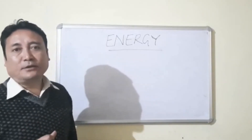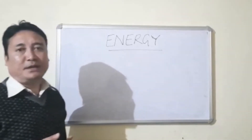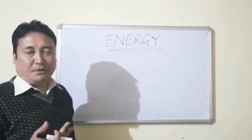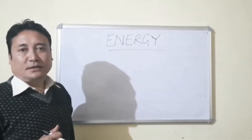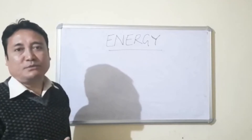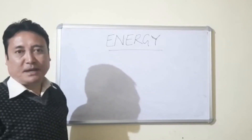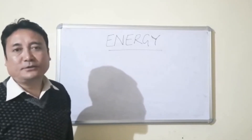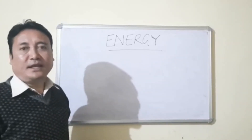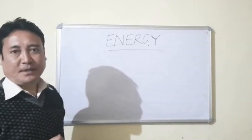There is a law of conservation of energy which states that energy can neither be created nor destroyed, but it can be transformed from one form to another. For example, in a plant, solar energy is converted into chemical energy which is stored in the plant. This chemical energy is utilized by living organisms and converted into mechanical energy. There are various forms of energy: light energy, sound energy, heat energy, mechanical energy, chemical energy, magnetic energy, and geothermal energy.